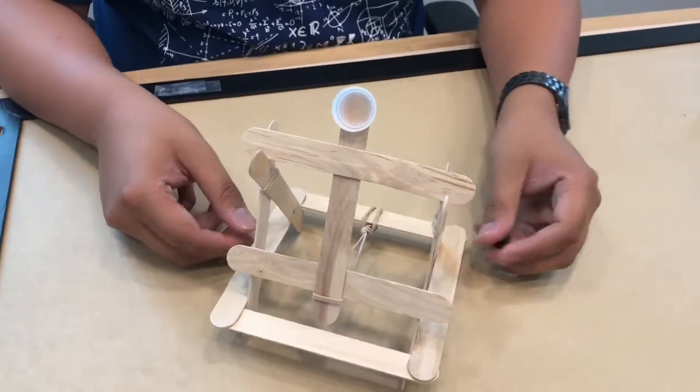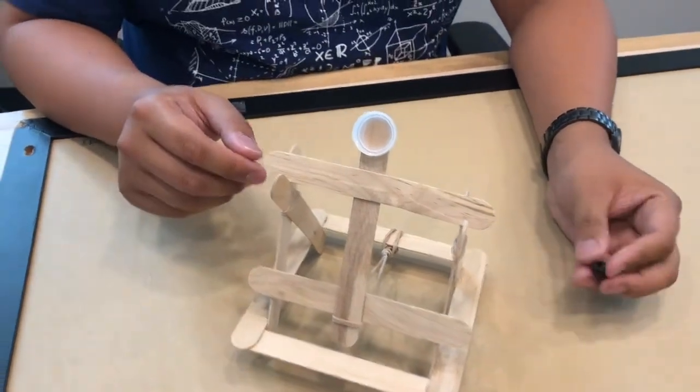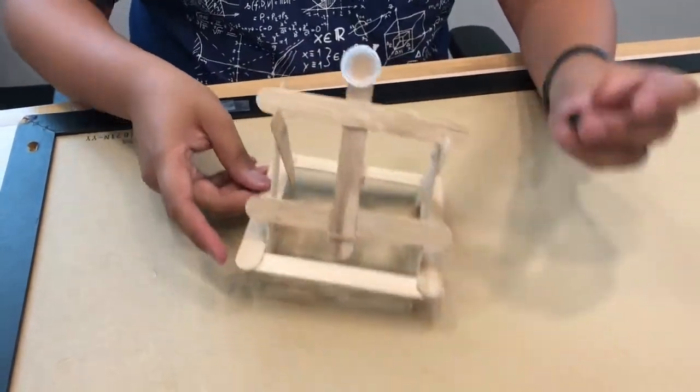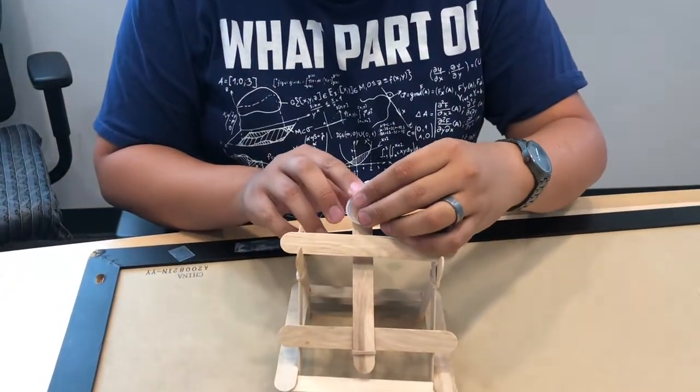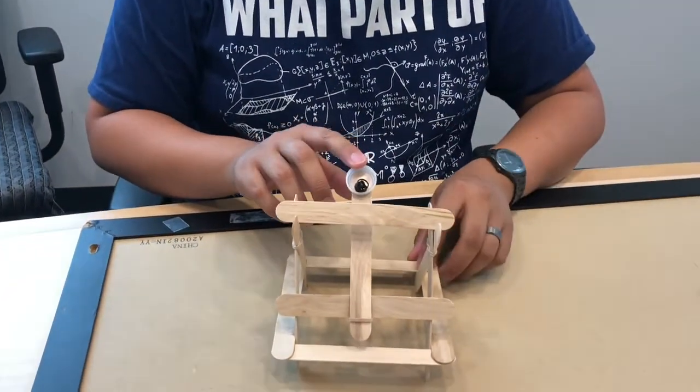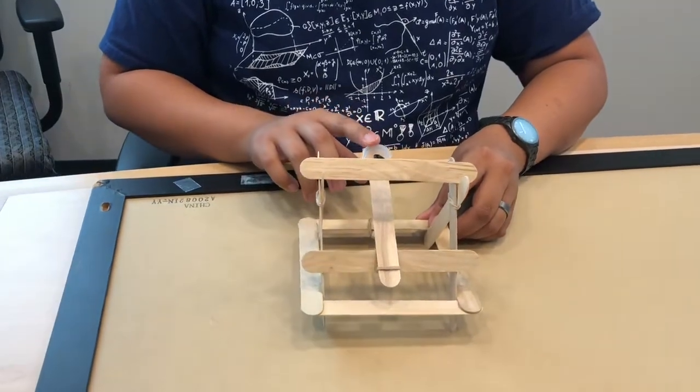So you will have Play-Doh or some sort of other material to launch. We don't have that here. So instead we just have a bread tie that we've called up into a ball. You just place it on, press it back. Oh well, that's the end of the video. Bye.